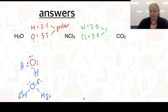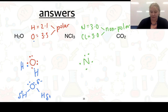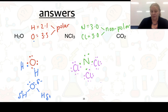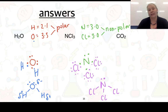Drawing NCl₃, we have nitrogen with five valence electrons and three chlorines each contributing their valence electrons. The resulting structure shows the three N–Cl bonds. Because the bond is non-polar, we don't need to draw any partial positives or partial negatives.